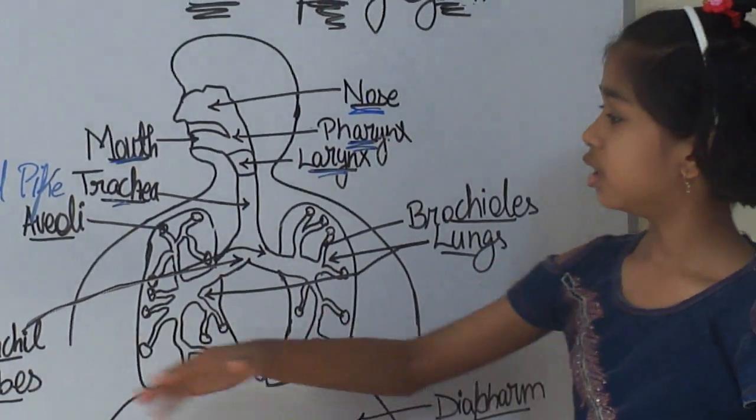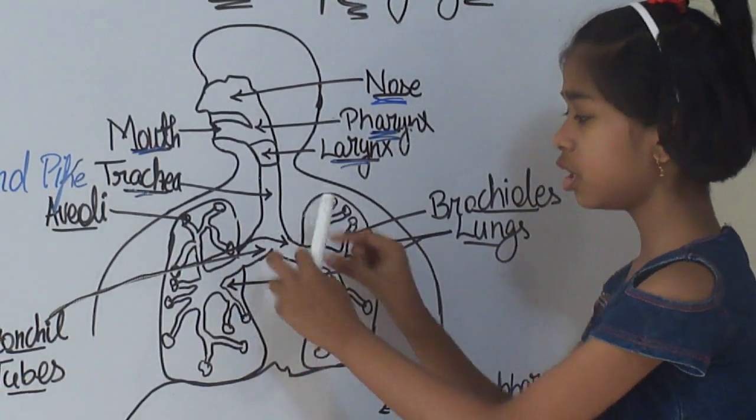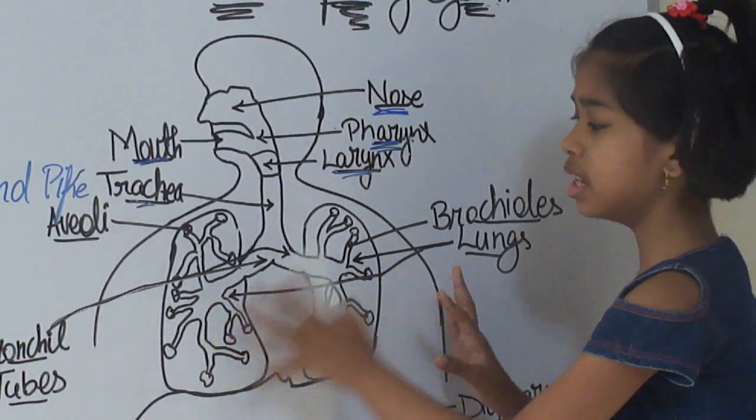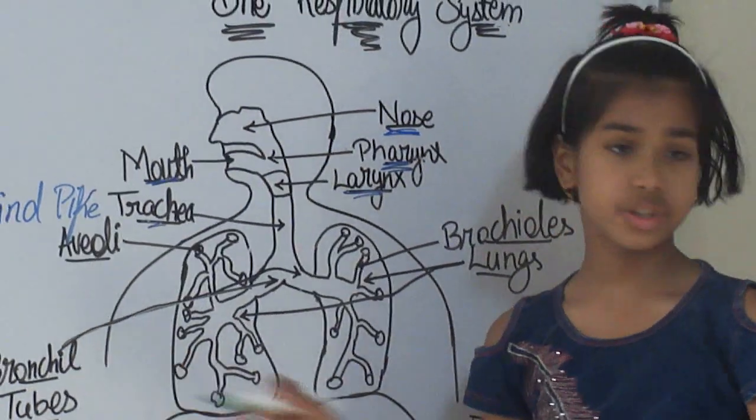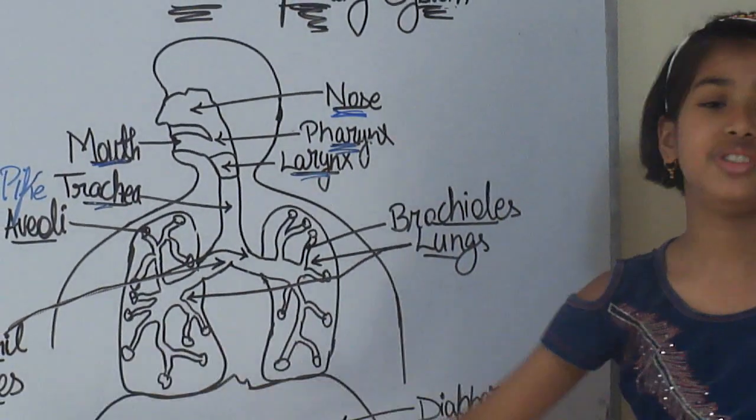And then, here are the two tube-like structures which separate these lungs. They are called bronchial tubes. They look like a branch, so therefore they are called bronchial tubes.